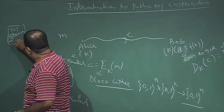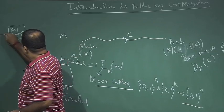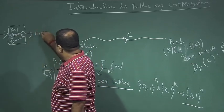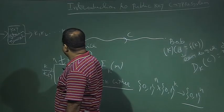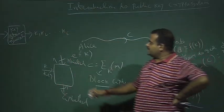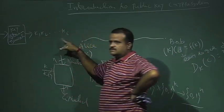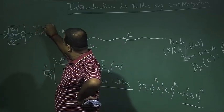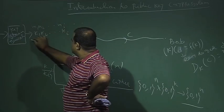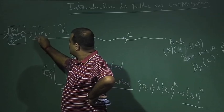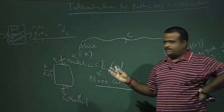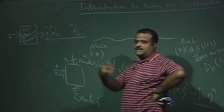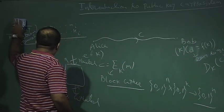In a stream cipher, a pseudo-random bit generator takes a seed key and generates a key stream k1, k2, ..., ki, and so on. The message bits are XORed with this key stream to get the ciphertext bits. Bob must use the same key stream generator to recover the message. This is the symmetric key setup where Alice and Bob share a common key k.